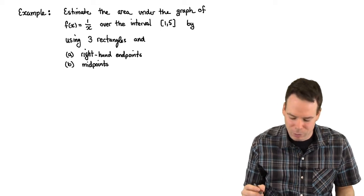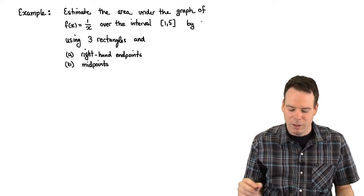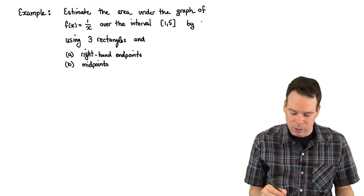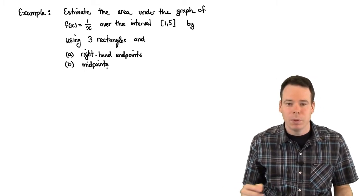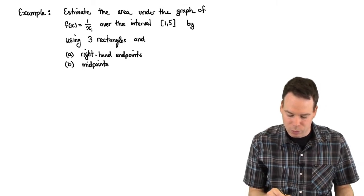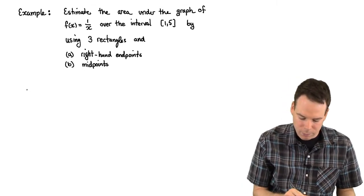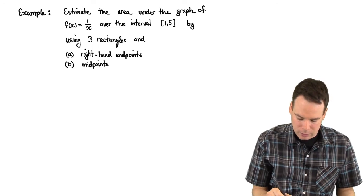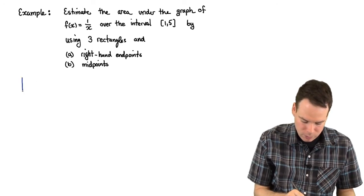Here's another example where we work out estimating the area under a graph using Riemann sums, right-hand in particular and midpoints, just so we get some more practice with this. Estimate the area under the graph of f(x) equals 1 over x over the interval from 1 to 5 by using three rectangles and either right-hand endpoints or midpoints.